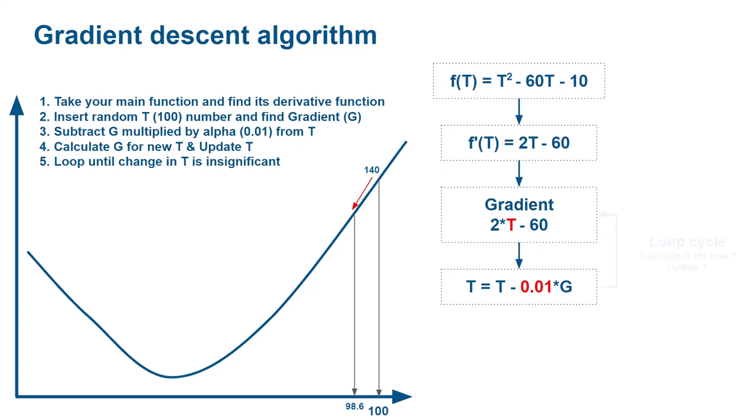Next, we will calculate gradient for new t and update t again. We will continue doing so until change in t is insignificant, which is called convergence.